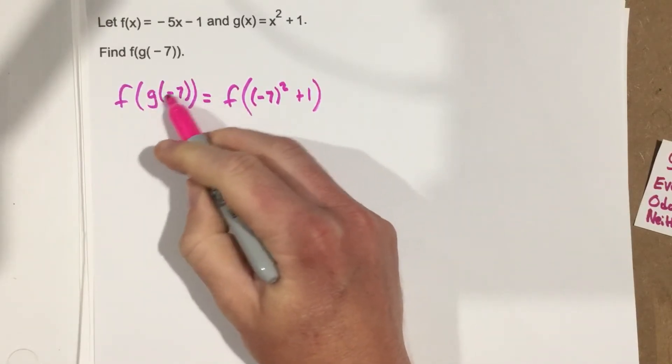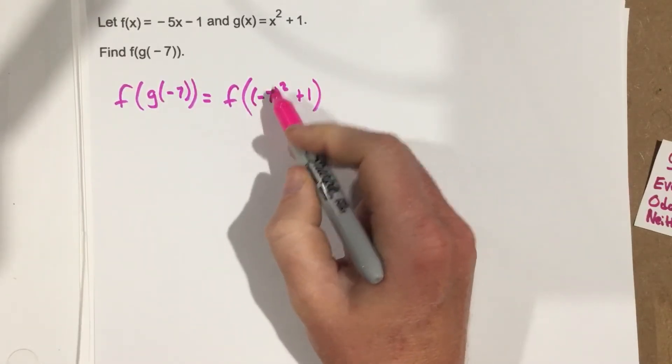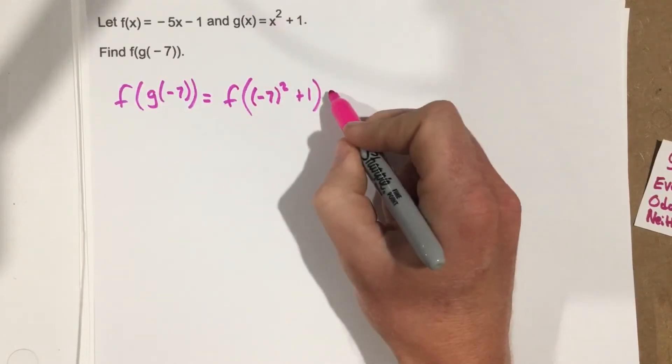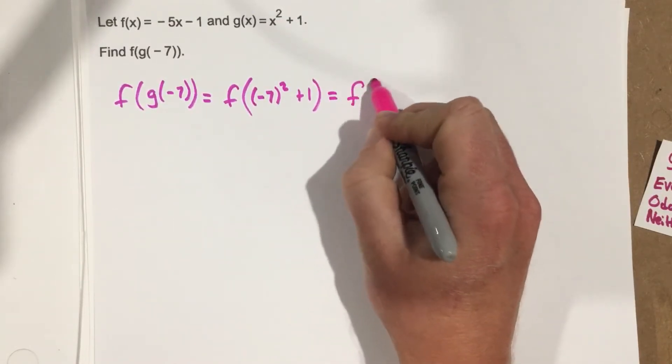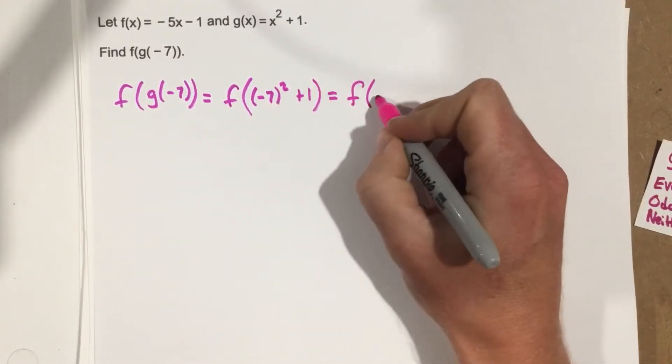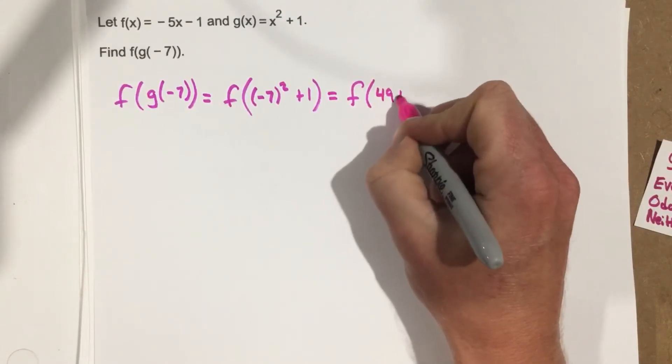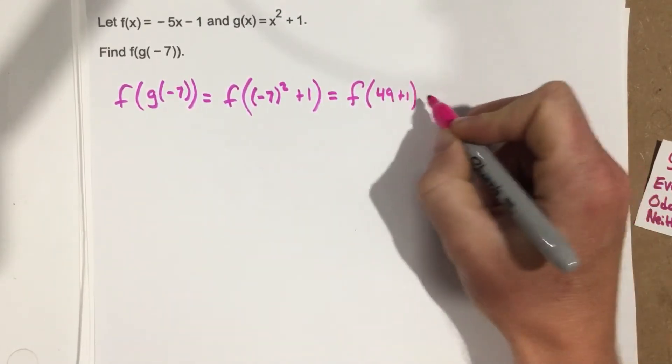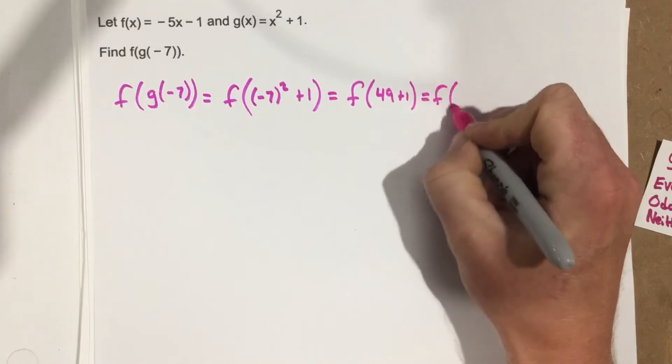Because we're replacing g of negative 7 with negative 7 being input into the g function, which is equal to f of, that's 49 plus 1, which is f of 50.